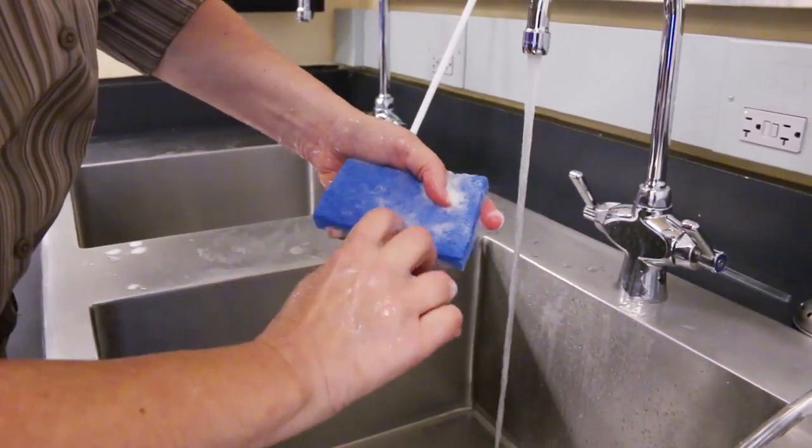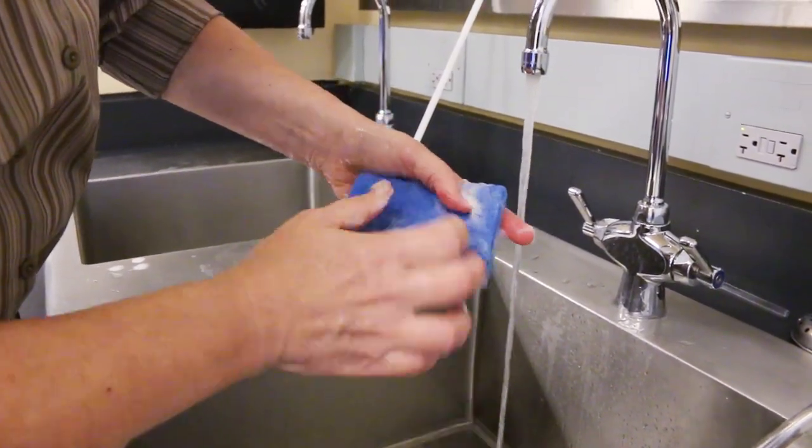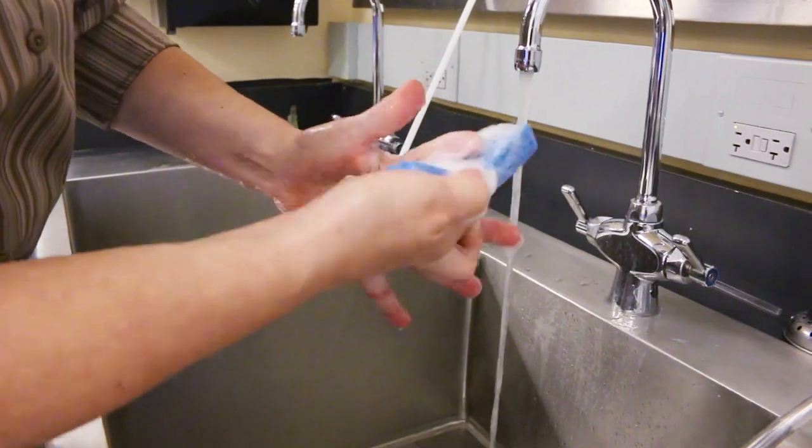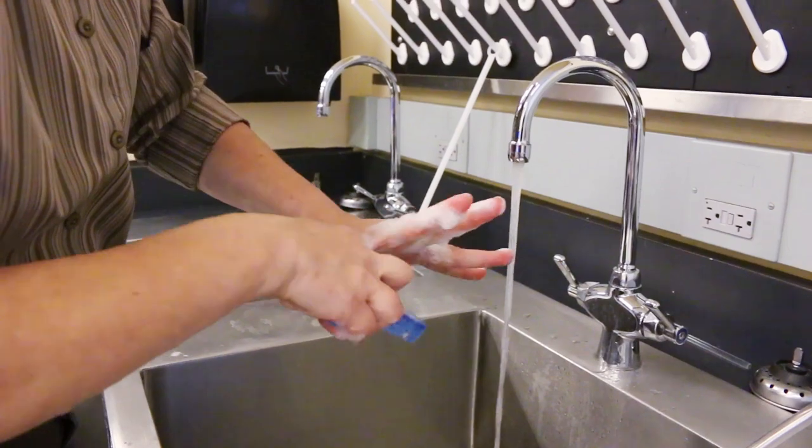Use this sponge to clean each of the four surfaces, top, side, bottom and webbing between your fingers, beginning with the thumb and repeating for each finger on each hand.